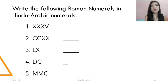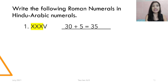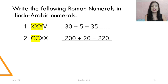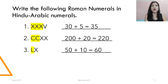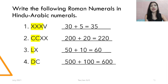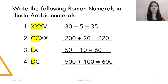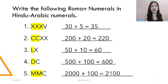Now write the following Roman numerals in Hindu-Arabic numerals: XXXV, CCXX, LX, DC, and MMC. The answers: XXXV is 30 plus 5 equals 35. CCXX is CC (200) plus XX (20) equals 220. LX is L (50) plus X (10) equals 60. DC is D (500) plus C (100) equals 600. MMC is MM (2,000) plus C (100) equals 2,100.